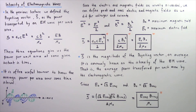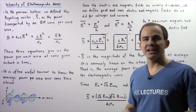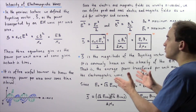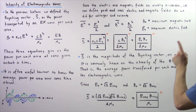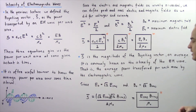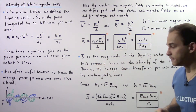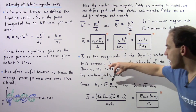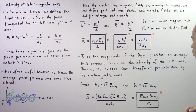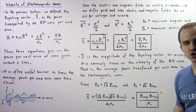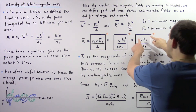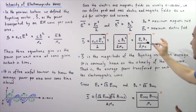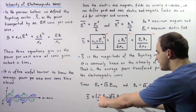Recall that we can relate the maximum fields to the root mean square fields via the following equations: E0, the peak electric field, equals the square root of 2 times the root mean square electric field; and B0, the peak magnetic field, equals the square root of 2 times the root mean square magnetic field. If we substitute these into our intensity equation, replacing E0 and B0 accordingly, we get the following result.